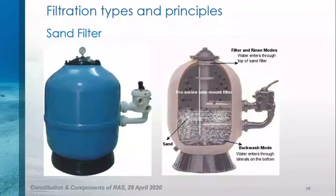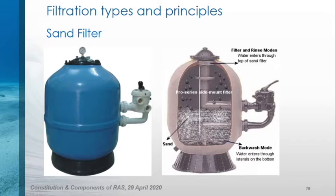In filtration types, a sand filter is used for the removal of suspended matter as well as floating and sinkable particles. Water passes through a rapid gravity sand filter filled with different sizes of sand particles. Particles are trapped within it, reducing numbers of bacteria and removing most of the solids in the system.